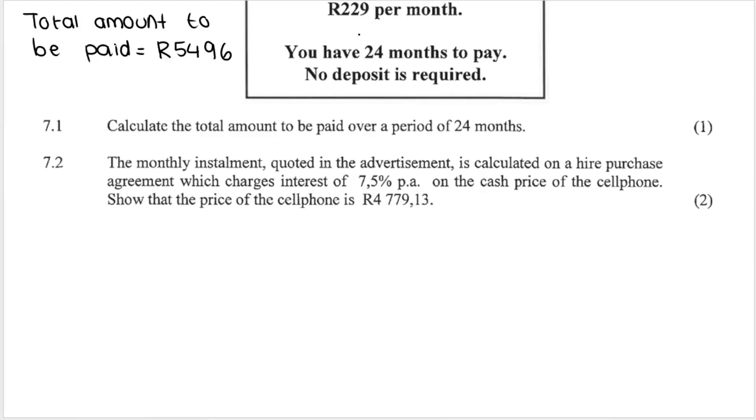Now it says the monthly installment, this is basically the monthly installment R229 per month, is calculated on a hire purchase agreement. Remember, we discussed in previous videos that hire purchase uses simple interest. It is a short term loan and this charges interest of 7.5% per annum on the cash price of a cell phone. This question says show that the price of the cell phone is this amount over here, R4779,13. So essentially what we have just calculated in the previous question using the monthly installments or monthly repayments is the total final amount of the interest has been added.